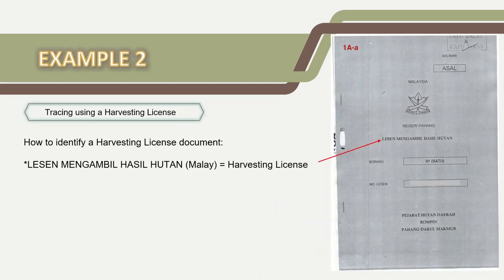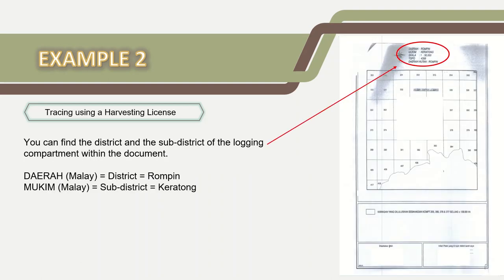For example 2, this is what a harvesting license document typically looks like. It will give you the information you need. In the document, you can find the district and the sub-district of the logging compartment. In this example, we have identified the sub-district as Keraton.